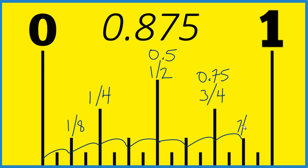Right there is seven-eighths. And if you divide seven by eight on your calculator, you get 0.875 — that's what we're looking for. If you need to convert 0.875 directly from a decimal to a fraction, jump over to my next video.